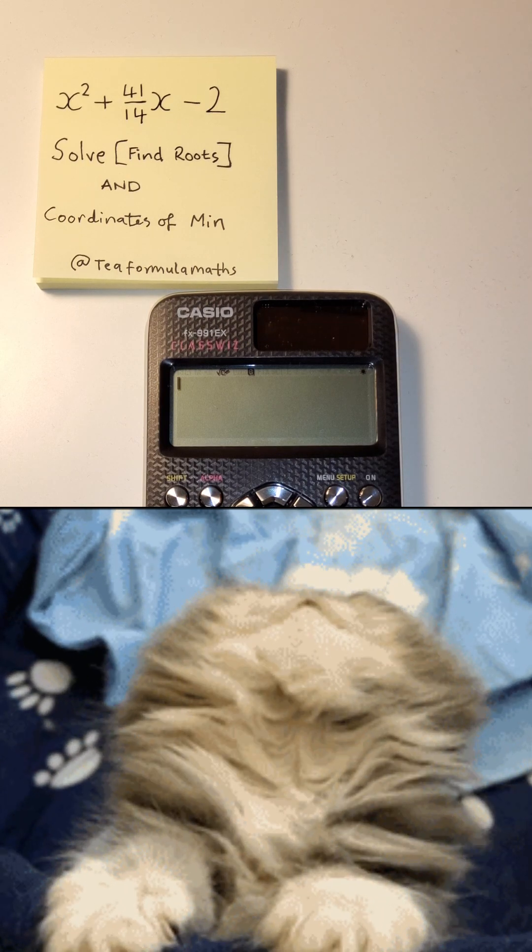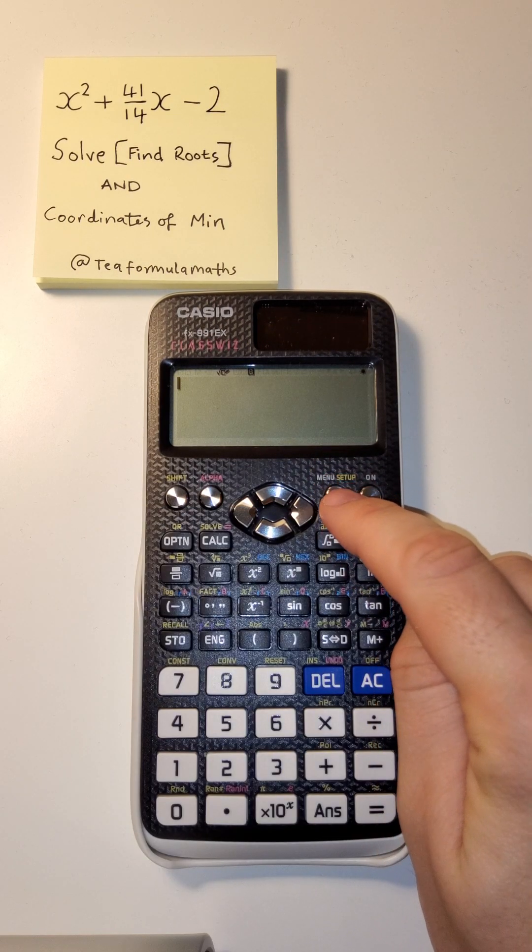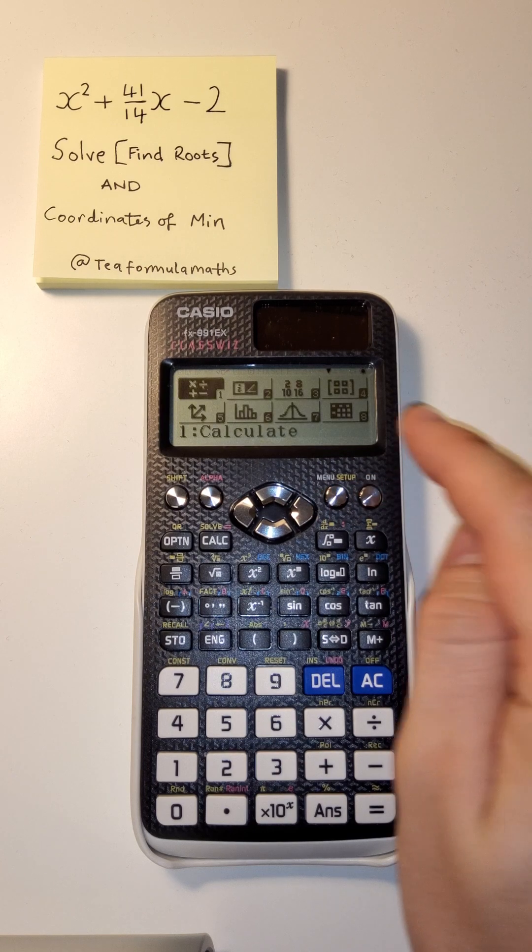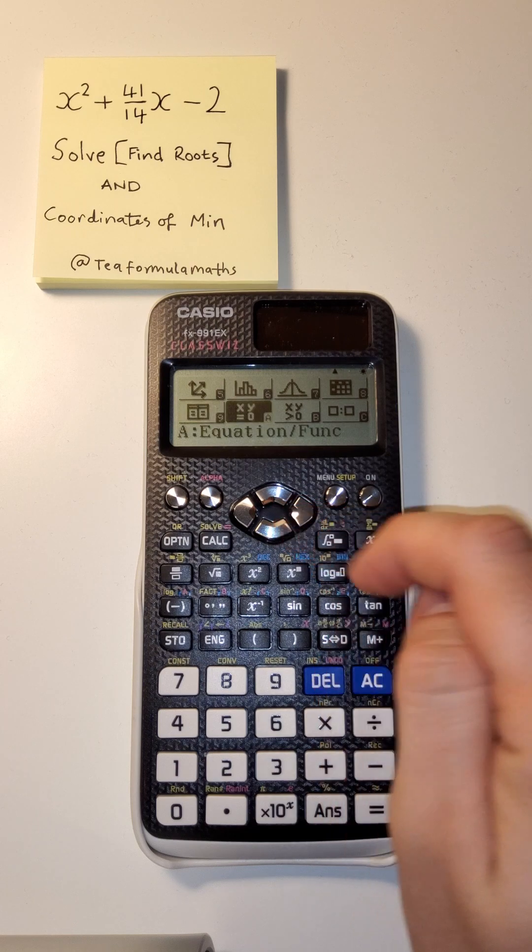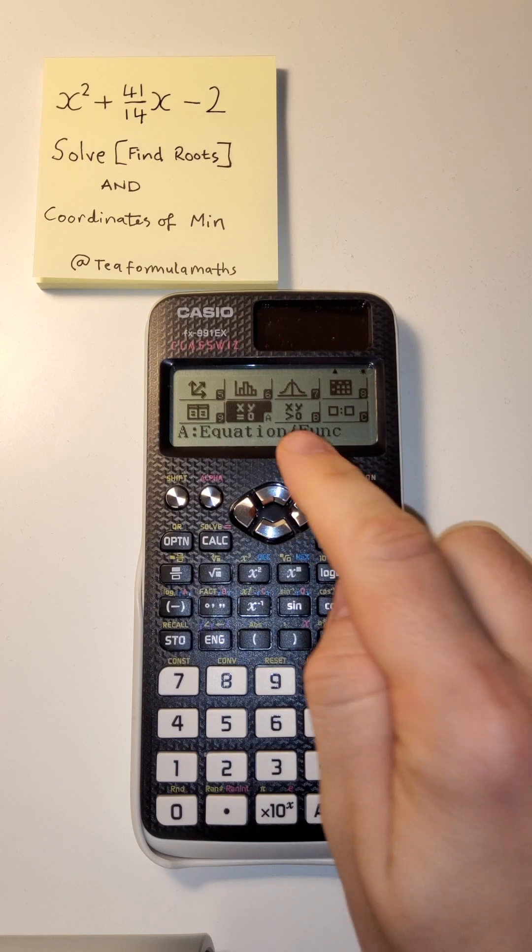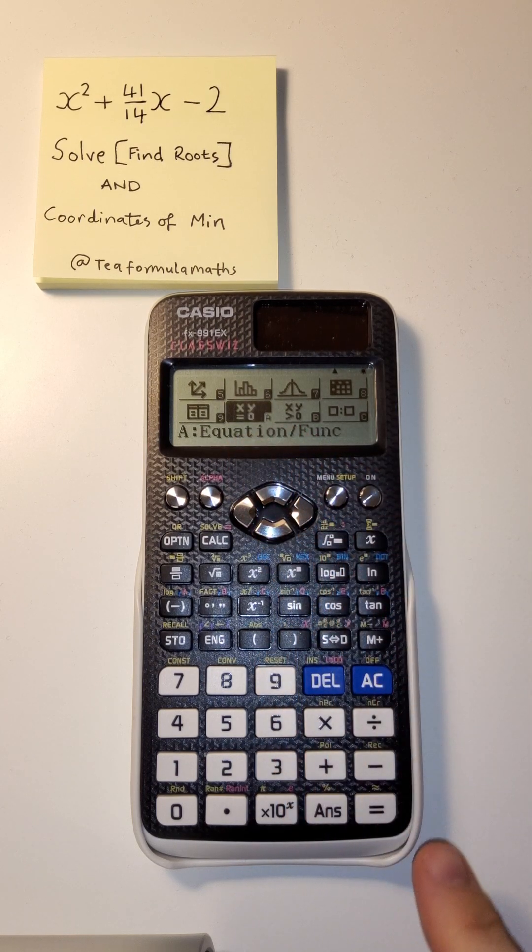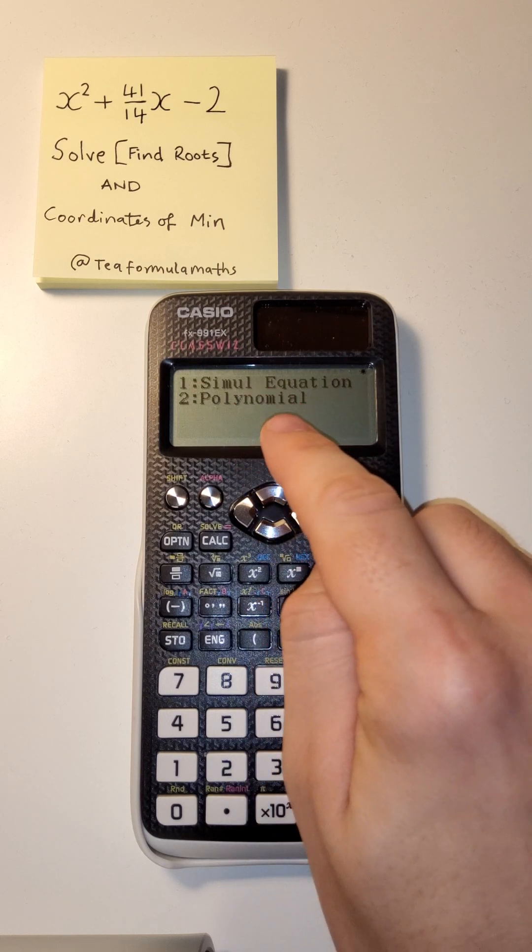Inside the menu system, which we access by pressing the menu button, you can use these to navigate or you could find section A, called equation function. Press equals to get in there.